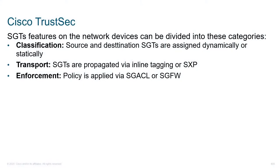Let's take a look at some of the components of Cisco TrustSec. Cisco TrustSec relies heavily on this concept of security group tags. Very much like a VLAN tag, this is an additional header that we're going to add to an Ethernet frame. I'll show you what the frame looks like and the details that we place within it.